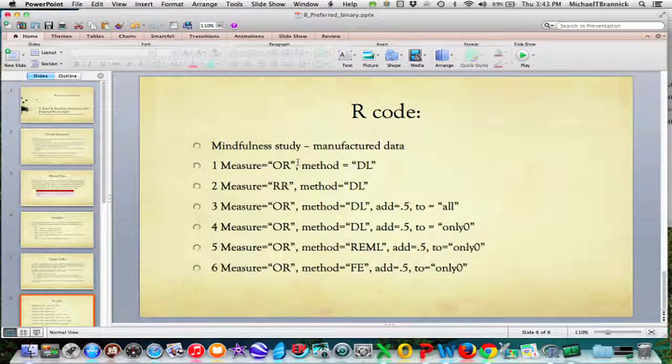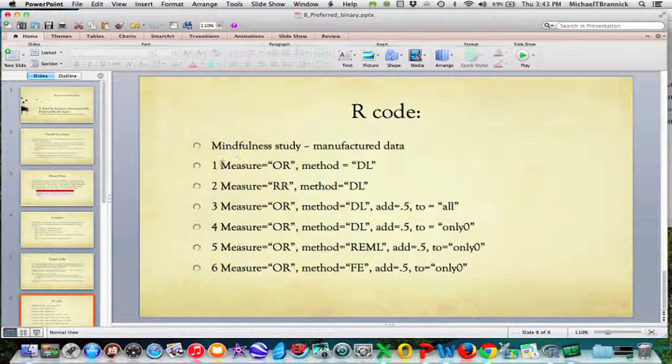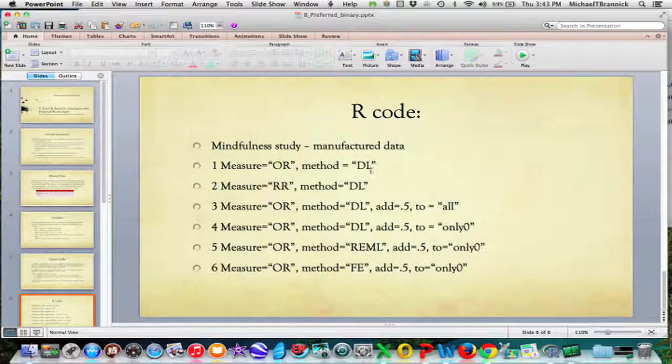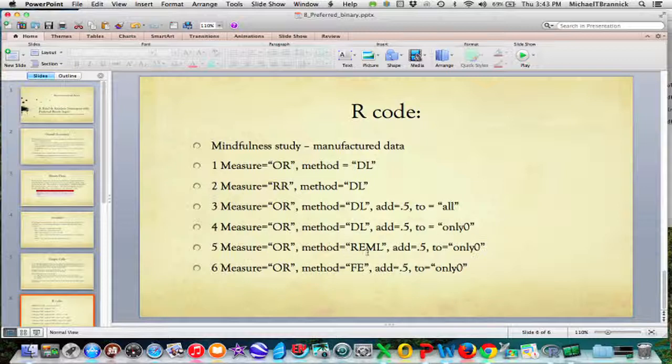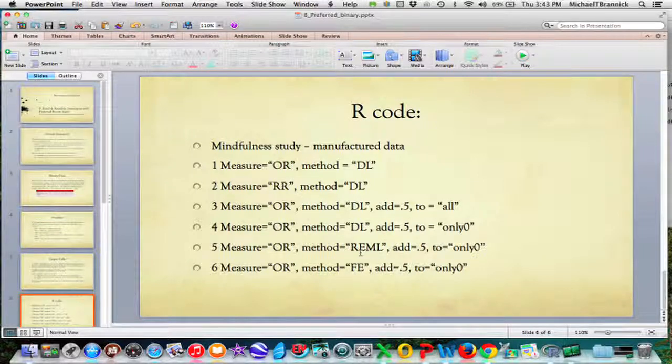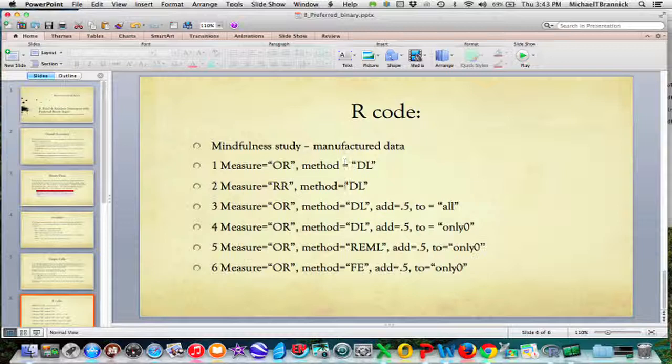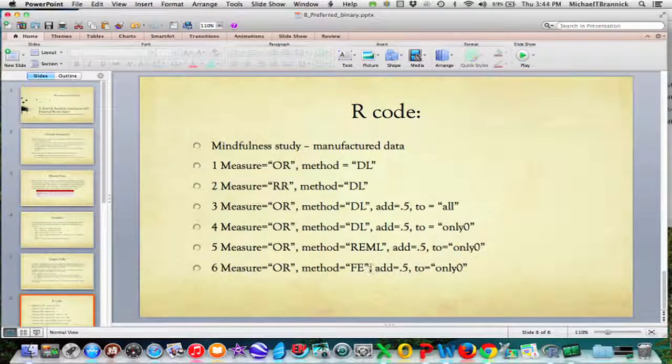Now I want to show you some analyses in R. I made up some data on mindfulness and insomnia. I'm going to show you six different analyses: odds ratio with DerSimonian and Laird for the REVC estimation; risk ratio with the same estimator; odds ratio with DerSimonian and Laird, adding 0.5 to all tables; the same thing but adding 0.5 only to tables with zero; then compare this last one with DerSimonian and Laird to one that uses restricted maximum likelihood to estimate; and lastly, a fixed analysis of the same data.